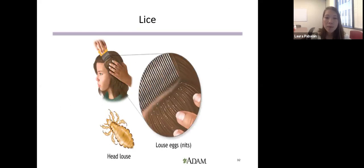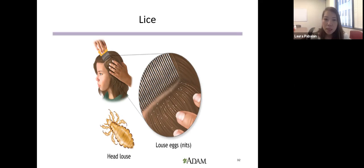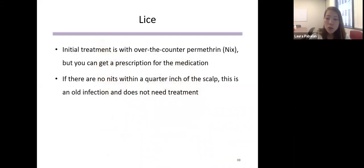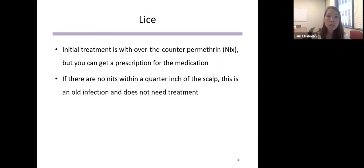Head lice infect the head and neck and attach their eggs to the base of the hair shaft. Lice move by crawling, not hopping or flying, so it's really spread by close person-to-person contact. The egg (nit) generally looks like a piece of sand glued to the base of the hair shaft. Initial treatment is with permethrin or Nix, available over the counter or by prescription. If there are no nits within a quarter inch of the scalp, it's an old infection and doesn't need to be treated.